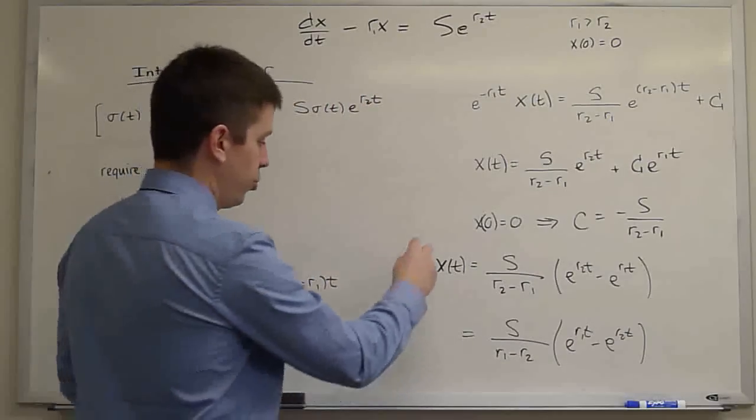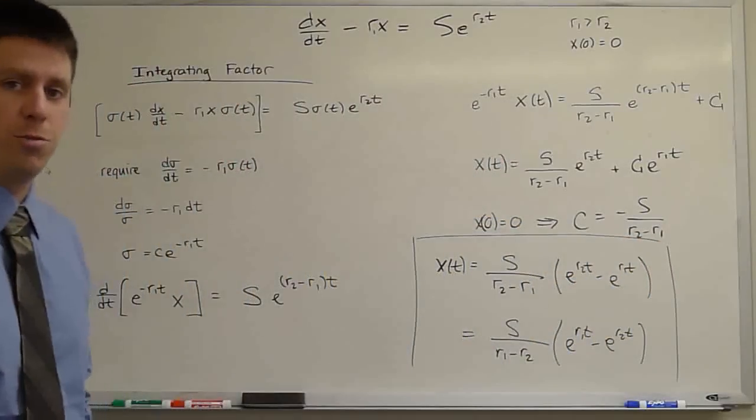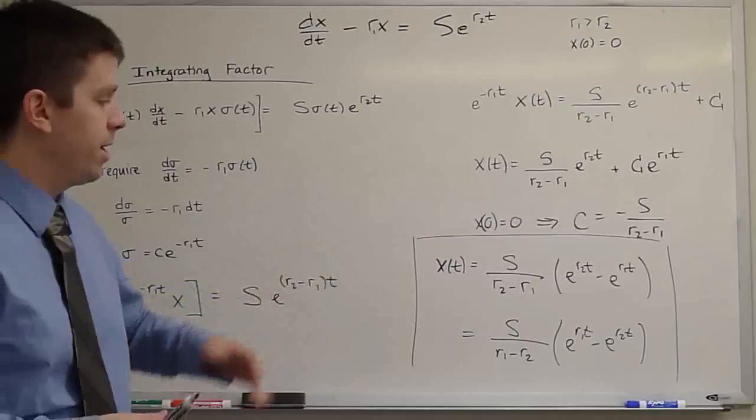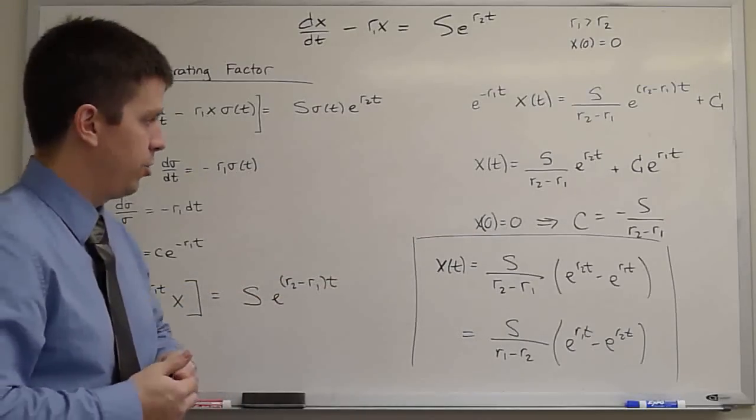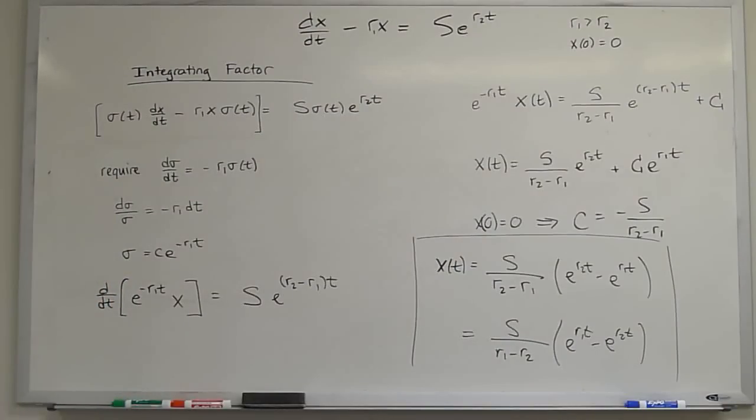So, same solution, just written in different ways, if you like your numerators and denominators to be positive. We did it by variation of parameters, we did it by integrating factors, we get the same solution as expected. Just a walkthrough of two different methods. Thank you.